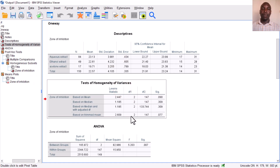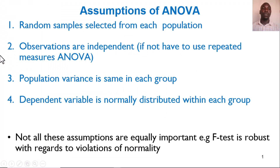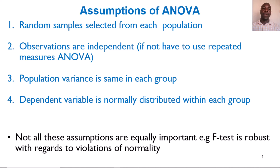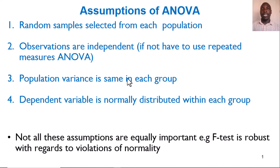The second table is very important. For one-way ANOVA, there are four main assumptions: first, random samples selected from each population; second, observations are independent — if they are dependent, such as before and after on the same participants, you would use a repeated measures ANOVA; third, population variance is the same in each group; and fourth, the dependent variable is normally distributed. However, not all assumptions are equally important. One-way ANOVA uses an F-test, which is robust and can be used even when normality is violated.